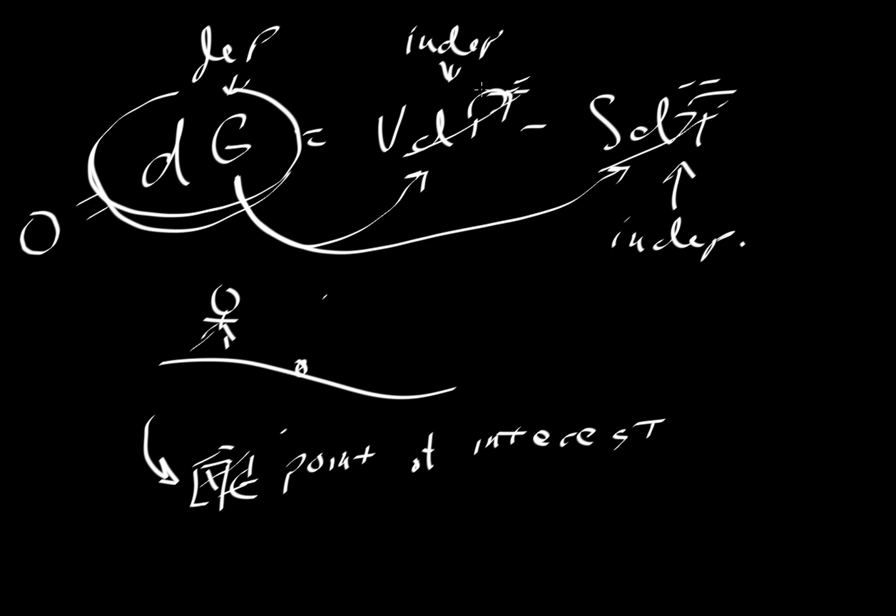If there's no change in pressure, then dP is zero. And if there's no change in temperature, then dT also goes to zero. And when those go to zero, then those terms drop out, then dG is zero, and that's when we have equilibrium in a system.